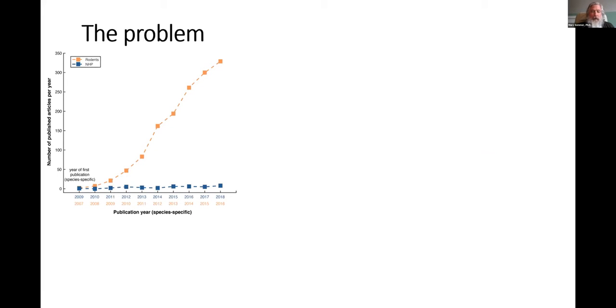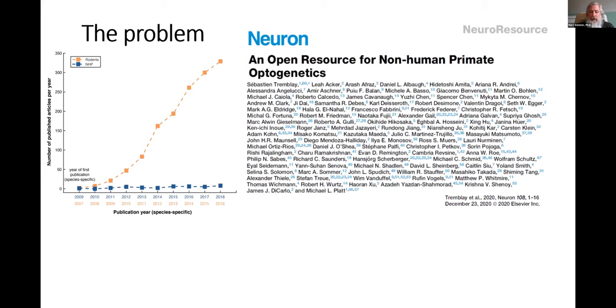Now the problem is, while optogenetics in rodents has exploded in the past 16 years or so, as shown by the orange data here, the same is not true for non-human primates as shown in the blue data here. It's still pretty stable. Those of us working on primates have gotten together recently to publish a consensus paper in Neuron, about a hundred author paper, where we're pooling all of our data into an open resource.